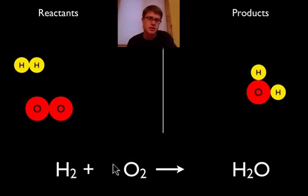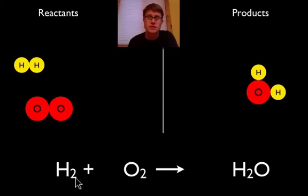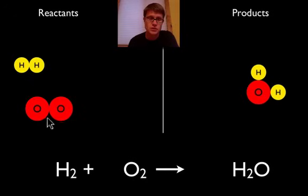The first thing we need to talk about is what these numbers actually mean. This 2 down here is a subscript, and it tells you how many atoms of hydrogen are in a molecule — so this molecule of hydrogen has 2 atoms. The thing you need to remember is that you can never change the subscript. If you change it, you're changing what that molecule actually is. So we have H2, O2, and H2O — which is 1 oxygen and 2 hydrogens.